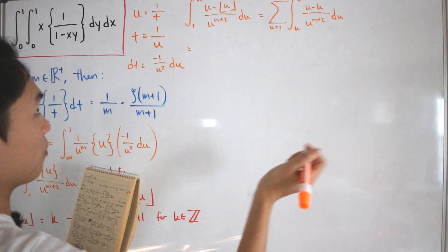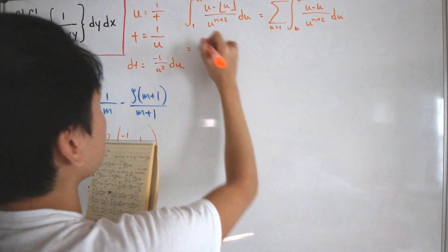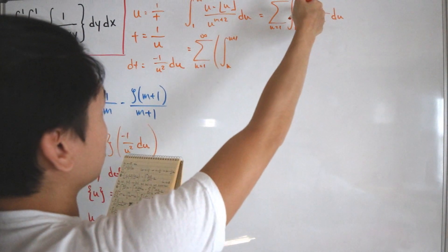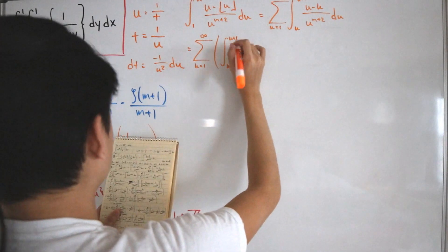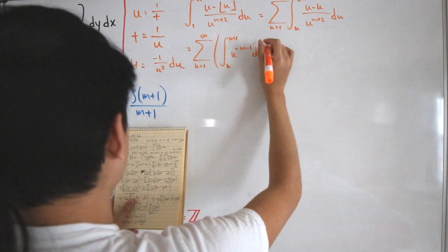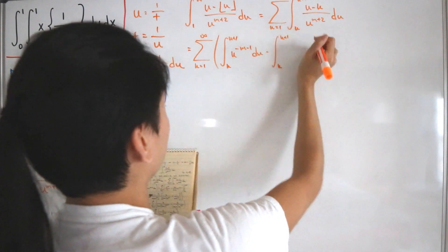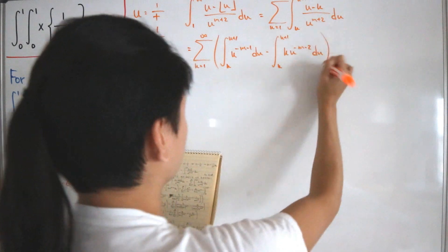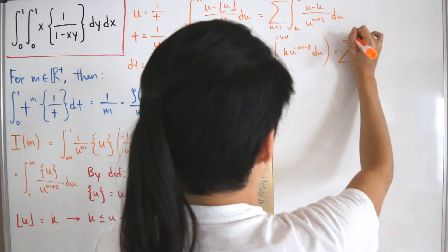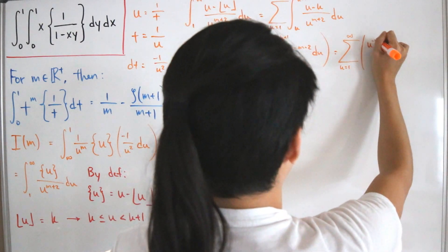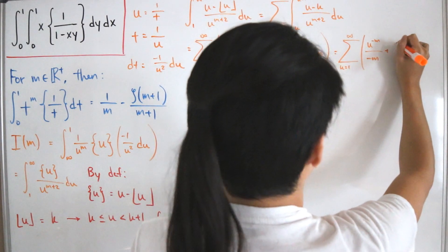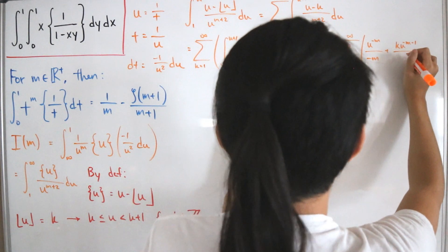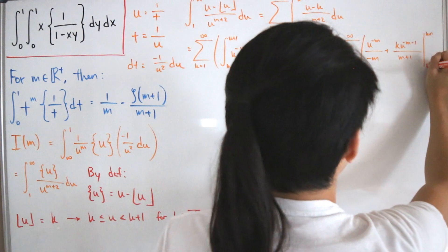Using linearity, we split this into two integrals: the infinite sum from k = 1 of the integral from k to k+1 of u^(-m-1) du, minus the integral from k to k+1 of k times u^(-m-2) du. Finding the antiderivatives gives u^(-m) / (-m) for the first, and k times u^(-m-1) / (m+1) for the second.